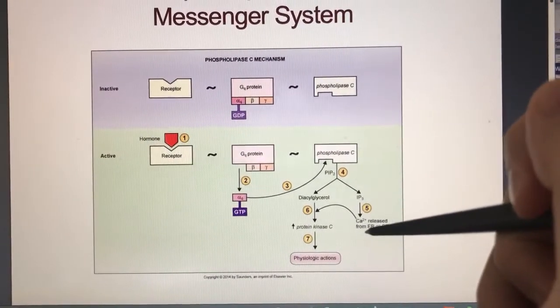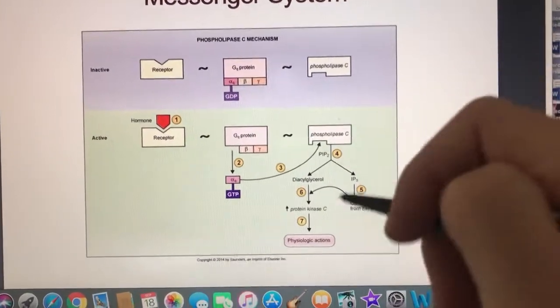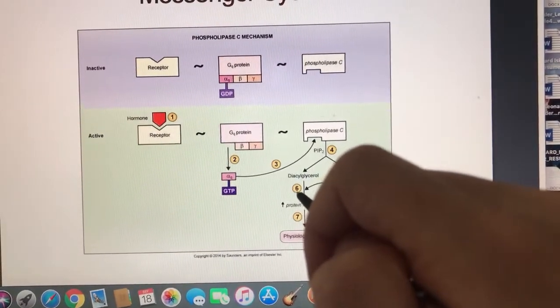Your calcium gets released in the endoplasmic reticulum or the smooth reticulum. So basically when your calcium gets released here, it comes over here to DAG.